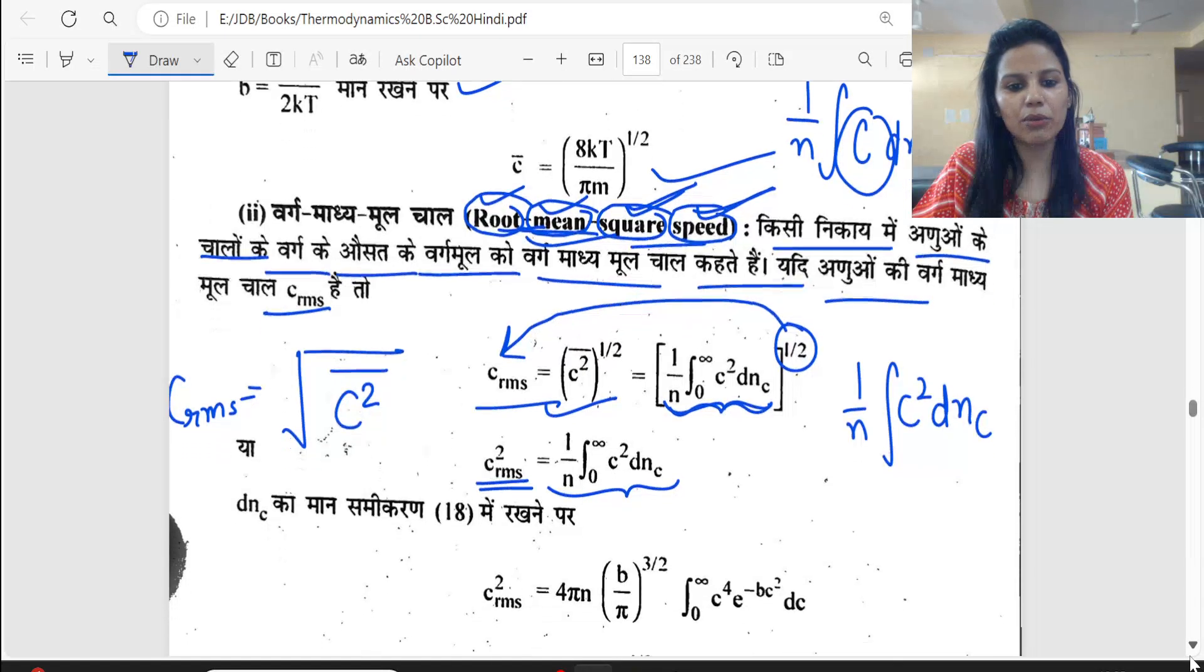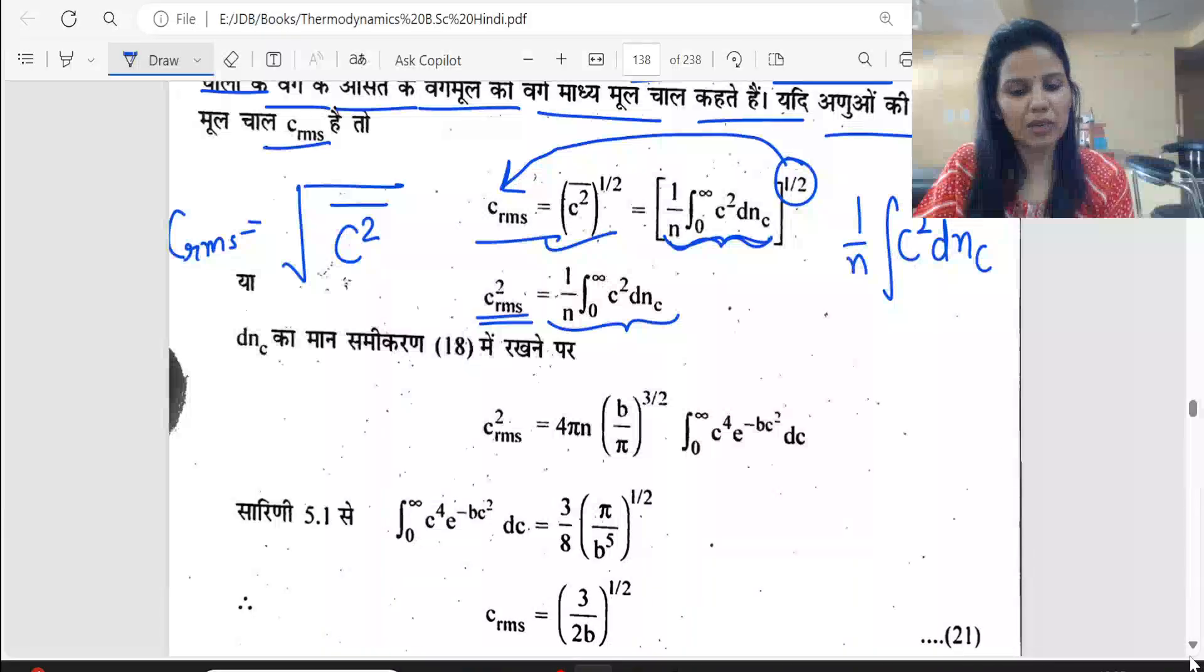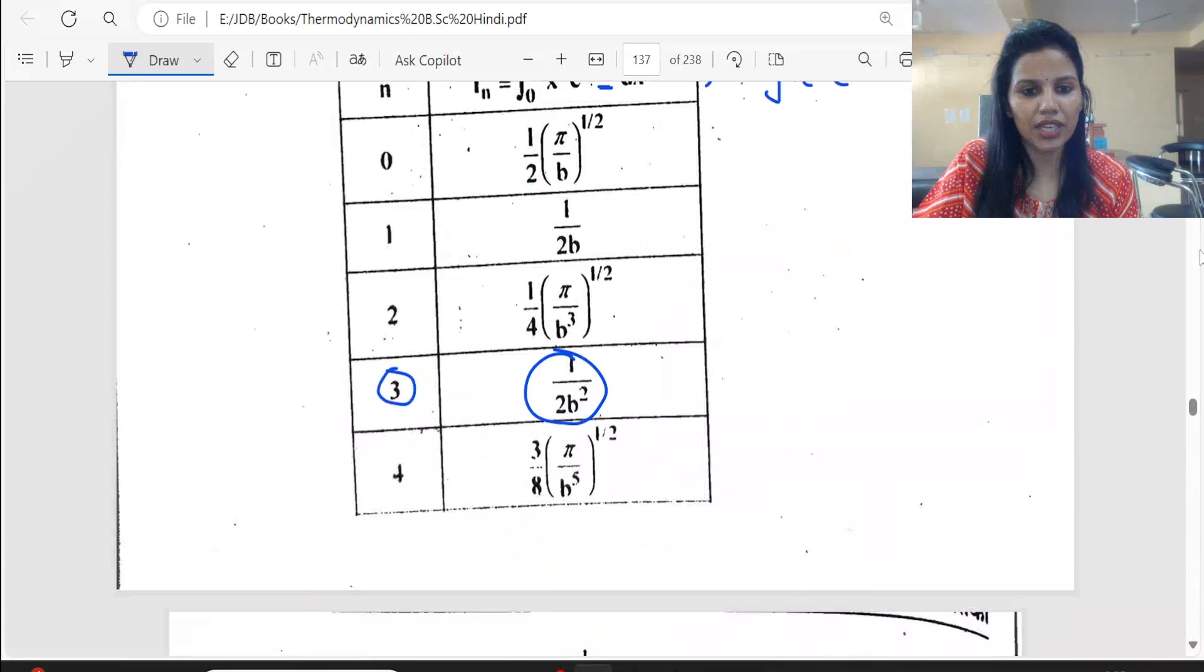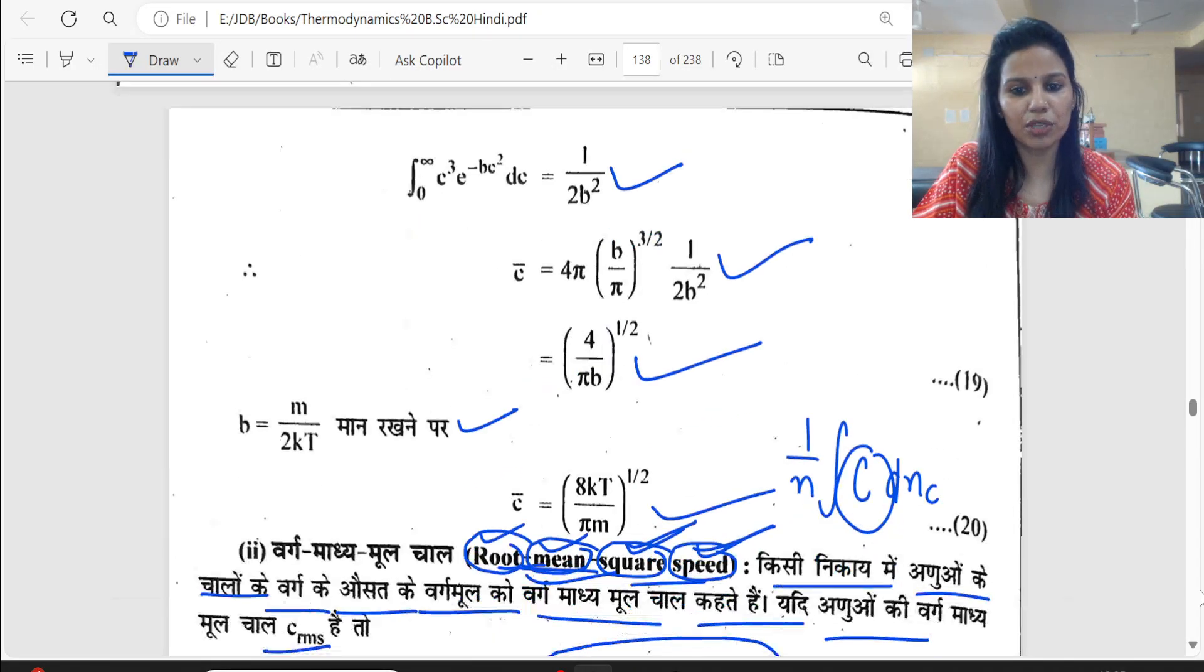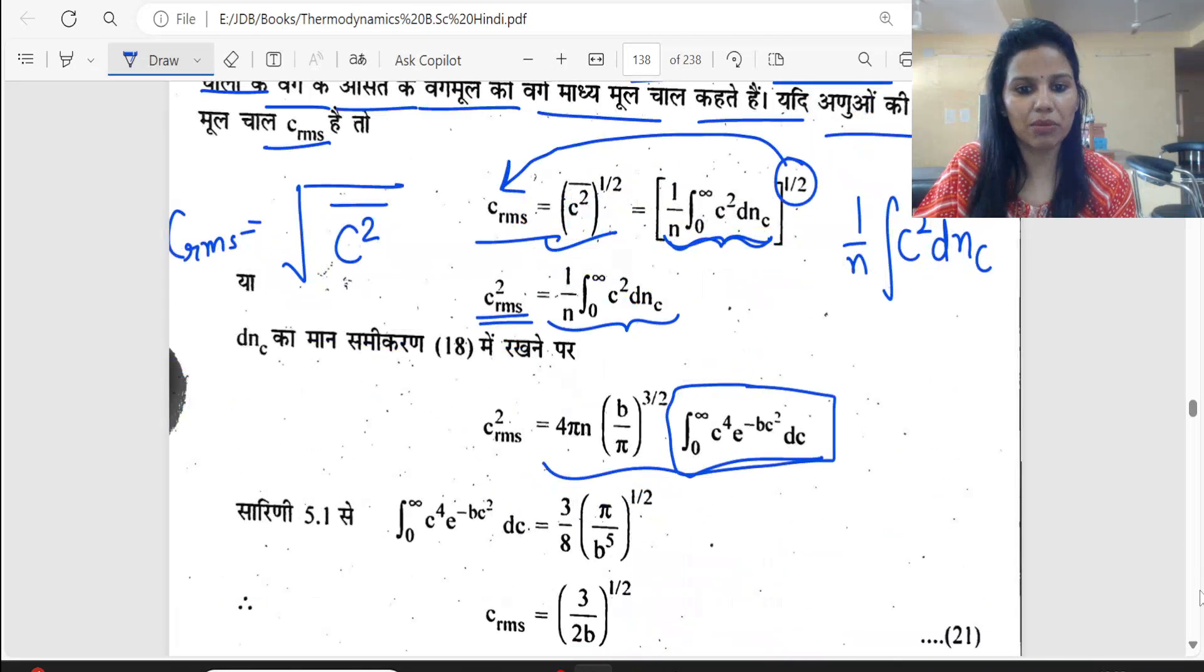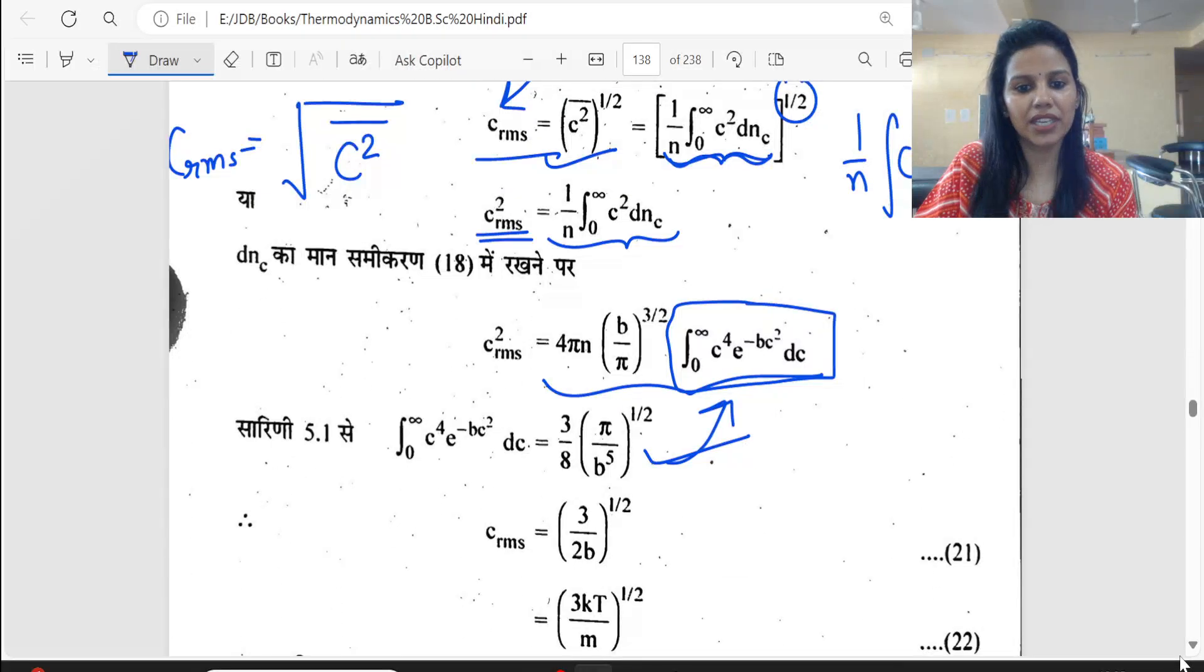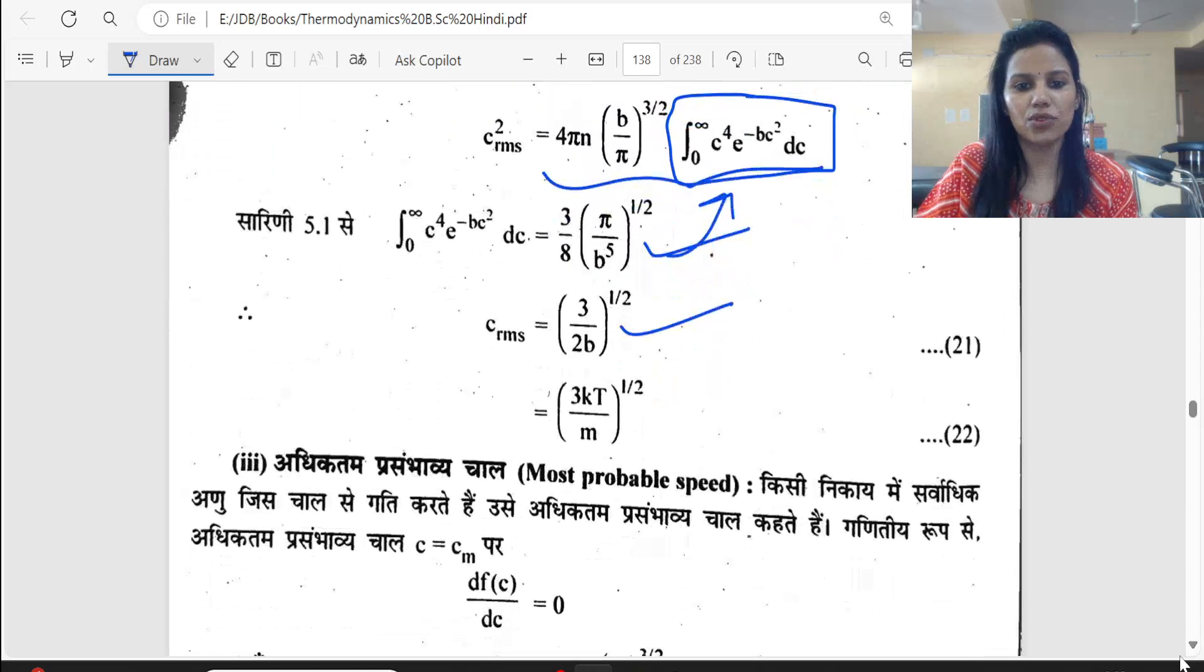The left hand side under root becomes square root, and the right hand side bracket value remains as it is. Put the value of dNC. The integration is now done. After solving, the value comes out to be square root of 3kT upon m.